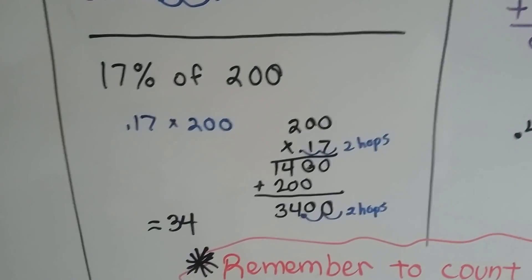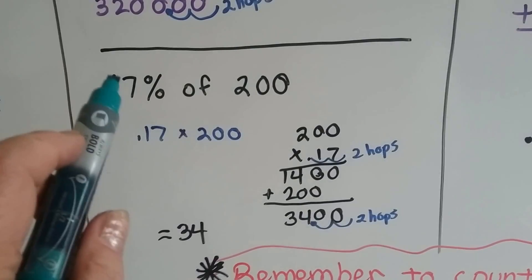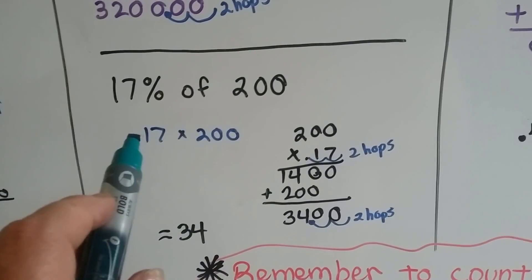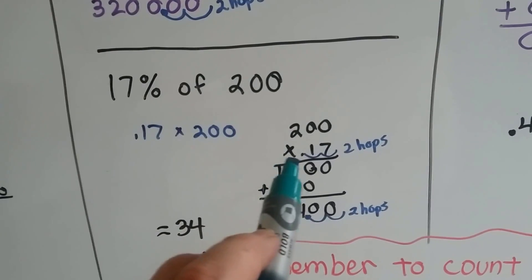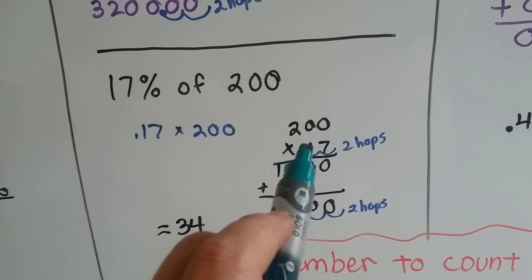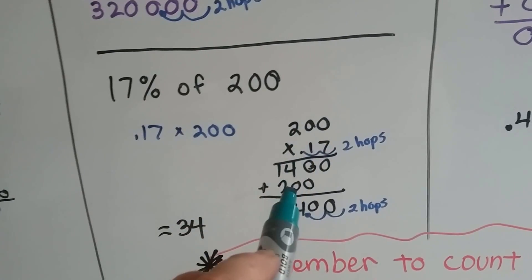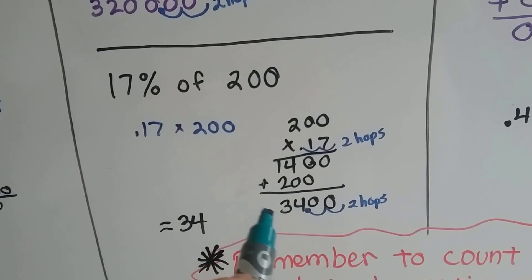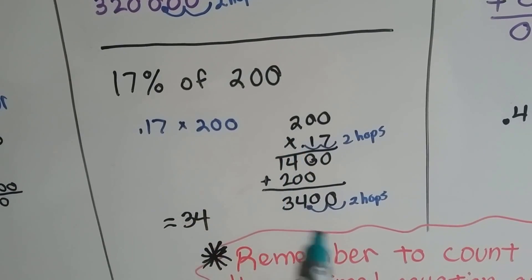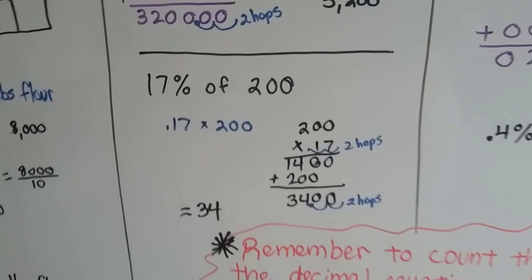If we have 17% of 200, we turn the 17% into a decimal of .17, because 17% means 17 hundredths. We multiply the .17 times 200. Seven times zero is zero. Seven times zero is zero. Seven times two is 14. Now it's the ones turn, so we're going to be in this column. One times zero is zero. One times zero is zero. And one times two is two. We add them all up, and we get three, four, zero, zero. There's one, two hops in the equation, so we put one, two hops in the product. Our answer is 34. Wasn't that easy?